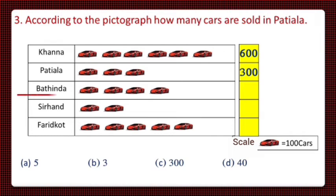Moving to the next city, third city is Bathinda and the number of pictures is 4. 4 cars are there. So, total 4 multiplied by 100 that is equal to 400 cars are sold in Bathinda. 4th city is Sirhand. 2 pics of cars are there and the total will be 2 multiplied by 100. 200 cars. The last city is Faridkot and the number of pictures of cars is 5. So, the total number of cars sold will be equal to 500.